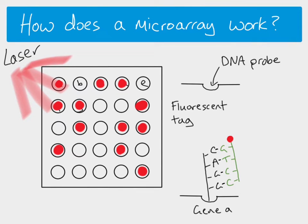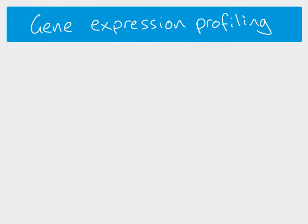You would end up with a pattern of fluorescent spots across the microarray. Because the company that makes the microarray knows what each well represents in terms of the gene, you can identify either which genes are being expressed or which genes are present, depending on what you're trying to find out.